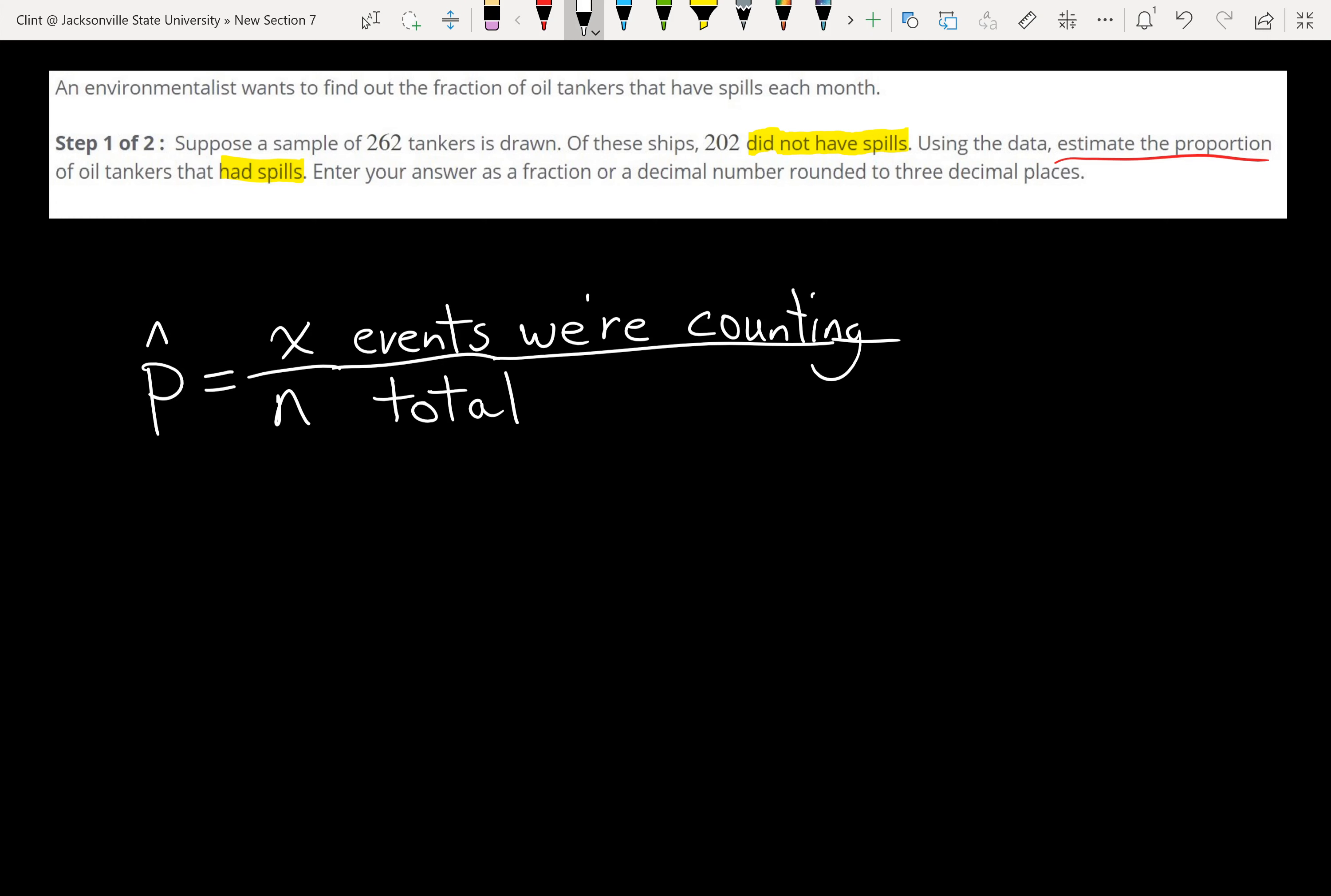Here are the ones that we're counting, the ones we care about, are the ones that had spills. So the first thing we have to do on this one is figure out how many tankers had spills. So it says that we had 262 tankers in total, 202 did not have spills, so we're going to subtract those off, and we'll get the 60 had spills. And you don't have to do that subtraction on every problem, you just have to read to see if it gives you the number you want, or if it gives you the opposite of the number you want.